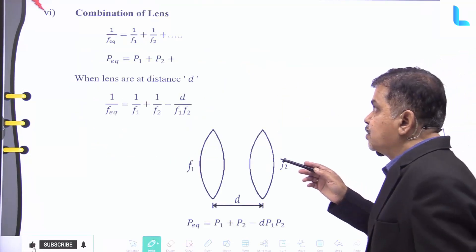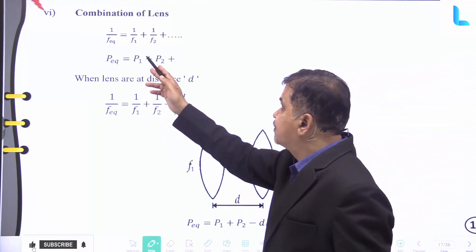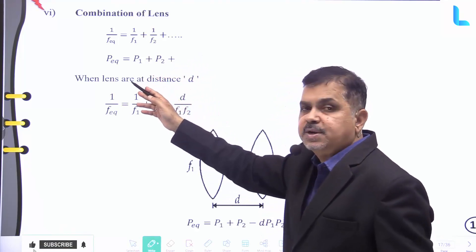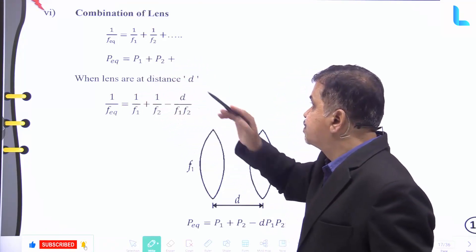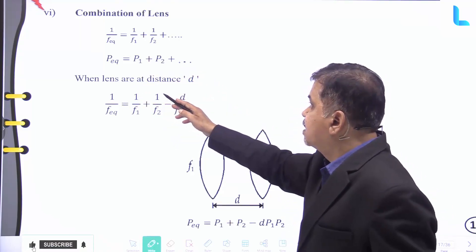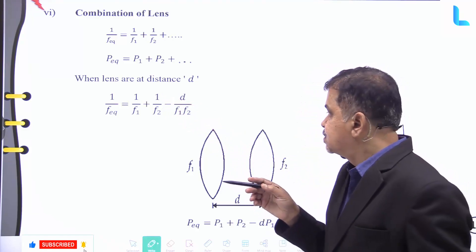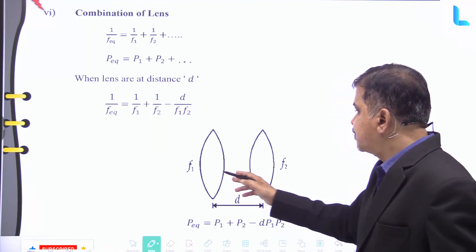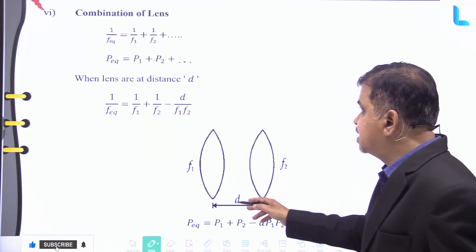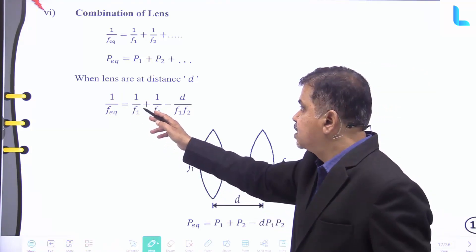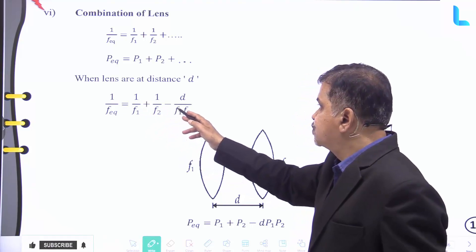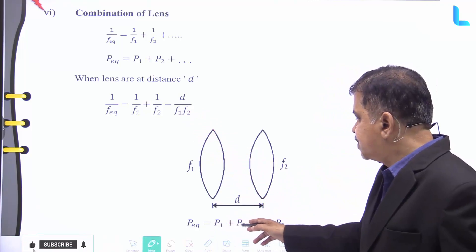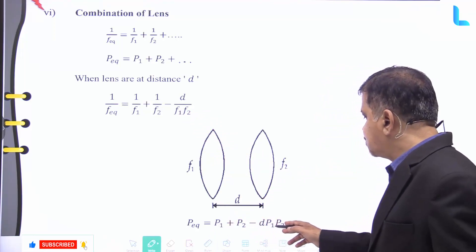For a combination of lenses in contact: 1/f_eq = 1/f₁ + 1/f₂ + … and P_eq = P₁ + P₂ + …. When two lenses are placed at a distance d apart: 1/f_eq = 1/f₁ + 1/f₂ − d/(f₁·f₂), and P_eq = P₁ + P₂ − d·P₁·P₂.